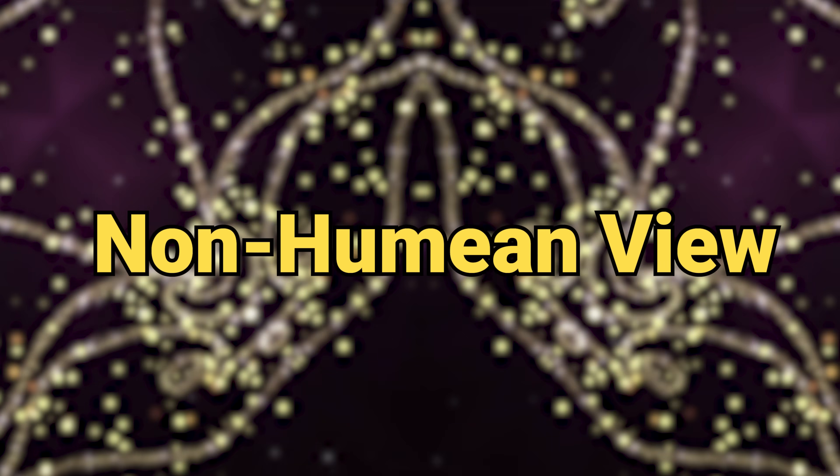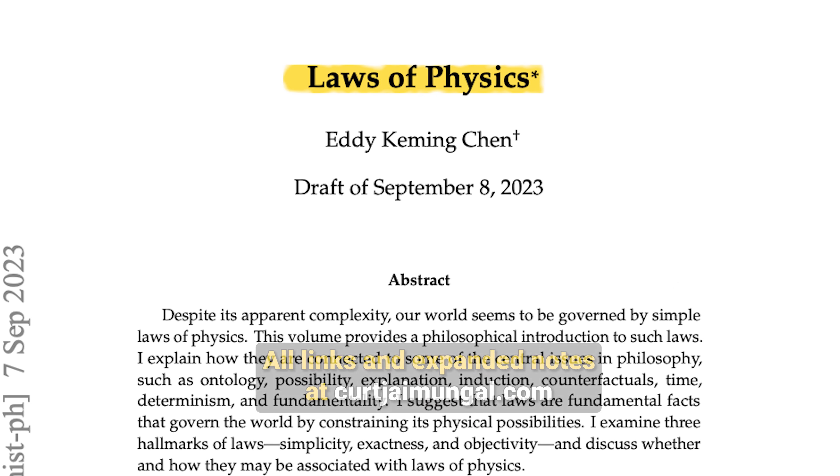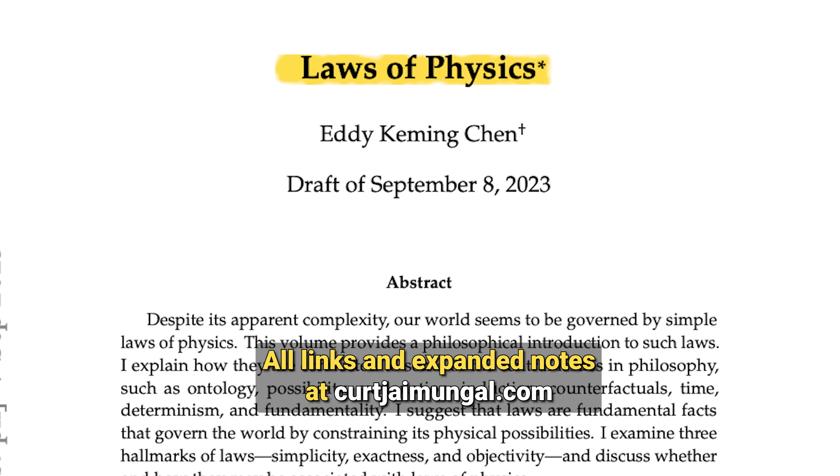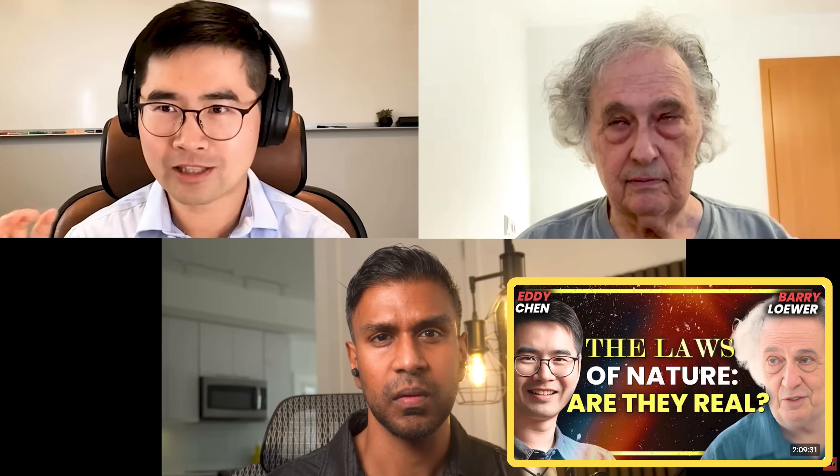There's also the non-Humean view, where laws actually have some genuine oomph — they're not just descriptions, they're prescriptive constraints on what happens. The recent Eddie Chen paper on the laws of physics frames this whole debate as fundamental laws constraining physical possibilities. I've spoken to him and Barry Loewer on exactly this topic.